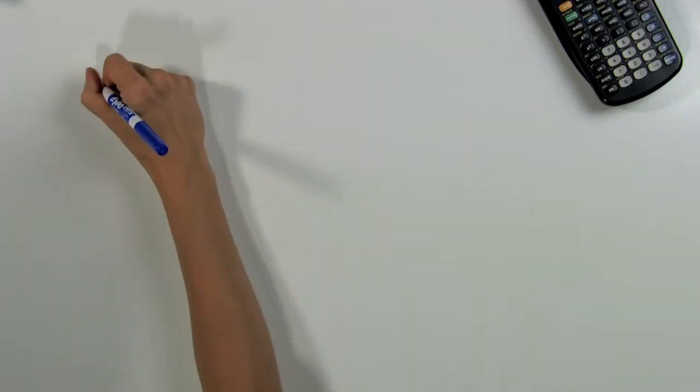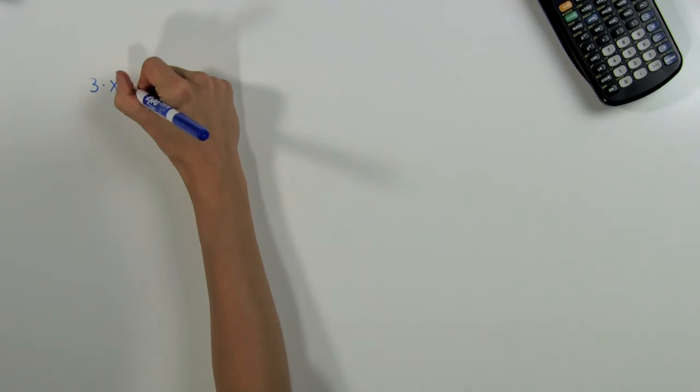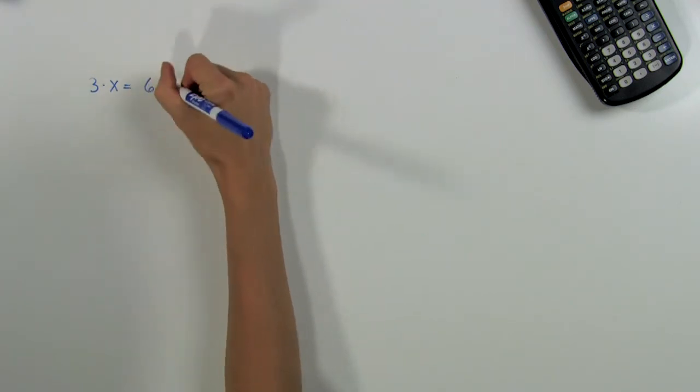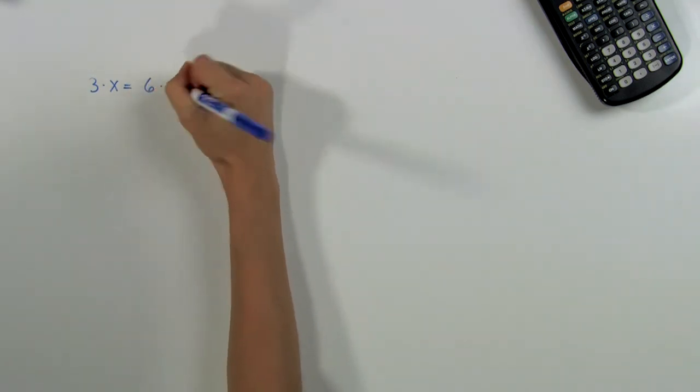Hi, my name is Eugenia, and I'm a math tutor. Today we're going to talk about how to solve multiplication equations using integers. Suppose we have an equation such as 3 times x is equal to 6 times 2. We want to solve it by using the integers to get x by itself on the left side.